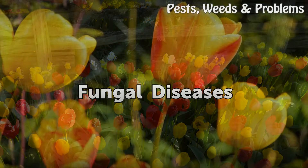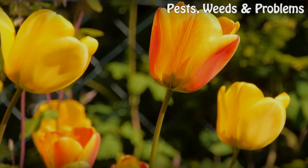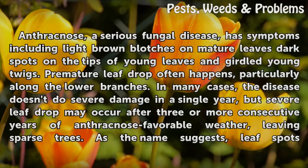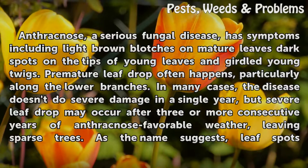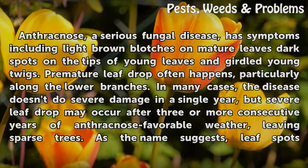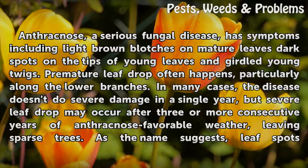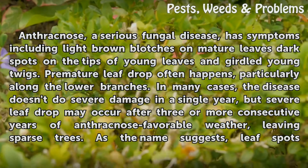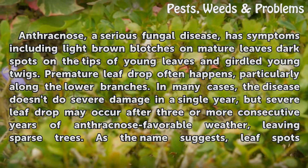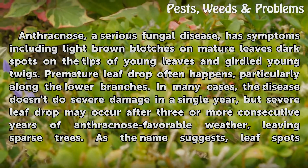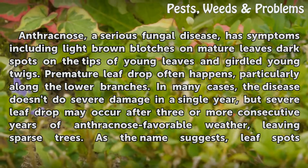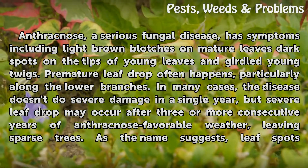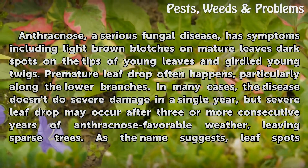Fungal Diseases. Anthracnose, a serious fungal disease, has symptoms including light brown blotches on mature leaves, dark spots on the tips of young leaves, and girdled young twigs. Premature leaf drop often happens, particularly along the lower branches. In many cases, the disease doesn't do severe damage in a single year, but severe leaf drop may occur after three or more consecutive years of anthracnose-favorable weather.